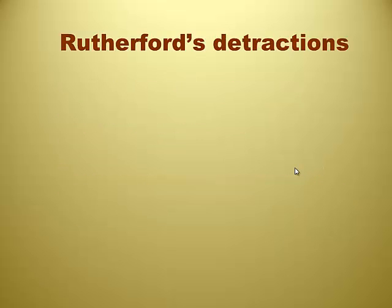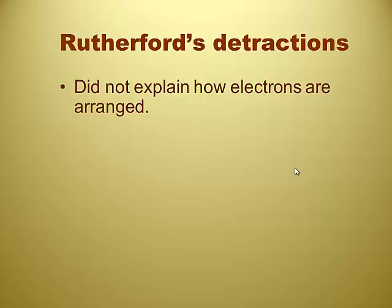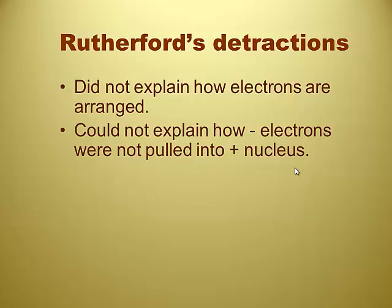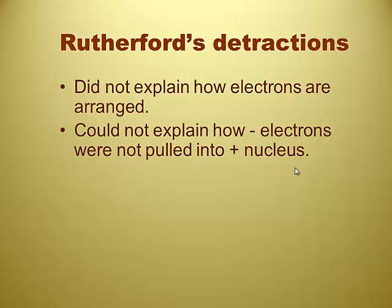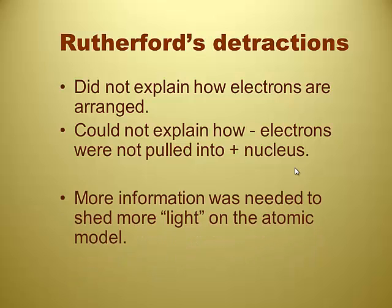The detractions of Rutherford's experiment. He didn't explain how the electrons were arranged. They were just kind of moving about the atom. He couldn't explain how electrons were not pulled into the nucleus. Yeah, because if they're orbiting the nucleus, and the nucleus is positively charged, aren't they being attracted, so why aren't they all just crashing into the nucleus? Yeah, exactly. So there was no explanation there. And we needed more information to shed some more light on the atomic model. Oh, that's very funny. Unit 11 light. Yes, get it, get it.